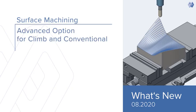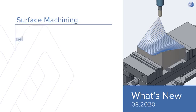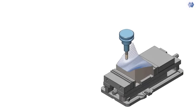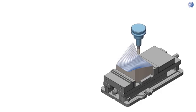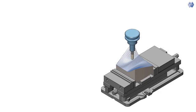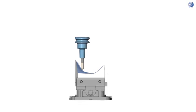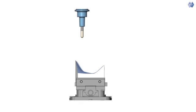An advanced option for climb and conventional cutting has been introduced. A new directional feature has been added to the surface-based toolpath calculation for one-way machining. This new option provides better control over the climb and conventional cutting conditions during cutting. The cutting direction, tool contact point, and tool axis orientation are now taken into consideration.